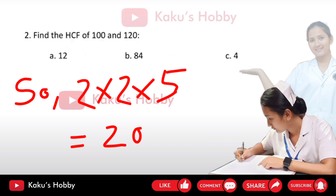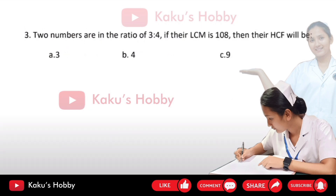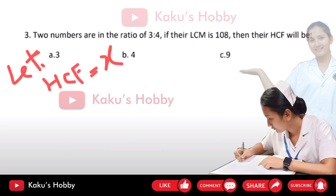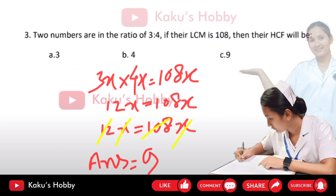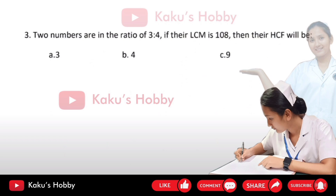The third question is: two numbers are in the ratio of 3 to 4. If their LCM is 108, then find their HCF. If we let HCF be x, then the numbers are 3x and 4x. So 3x into 4x gives 108x, and the answer is 9. The correct option is C.